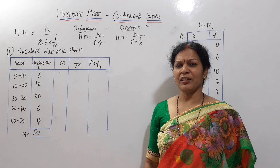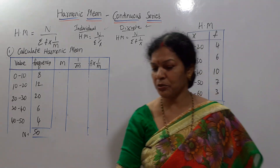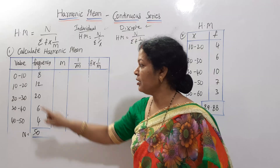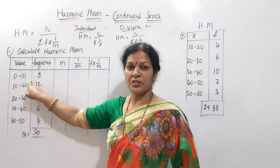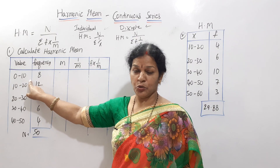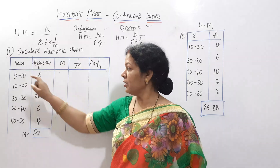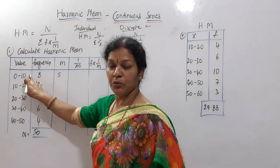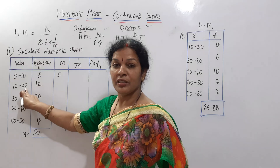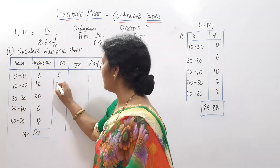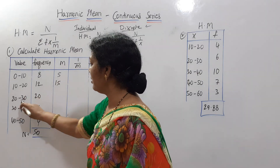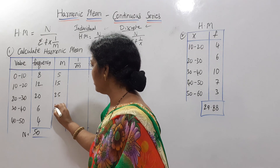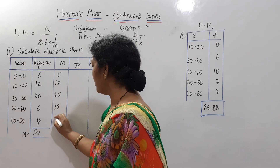We have simple calculations. First, we find the mid value. The mid value is the sum of class limits divided by 2. So 0–10 gives mid value 5, 10–30 divided by 2 gives 15, 50 divided by 2 gives 25, then 35, then 45.